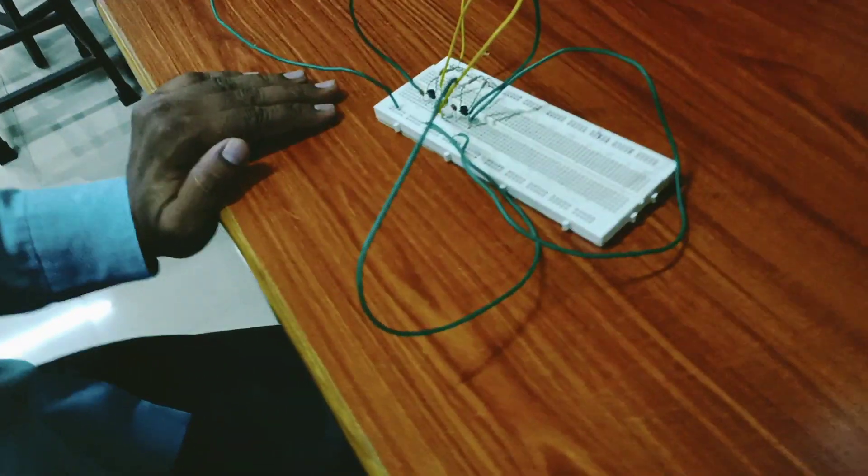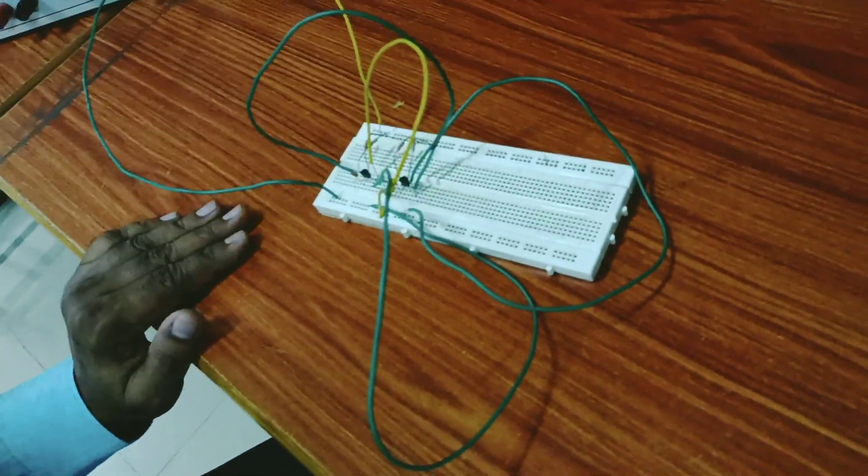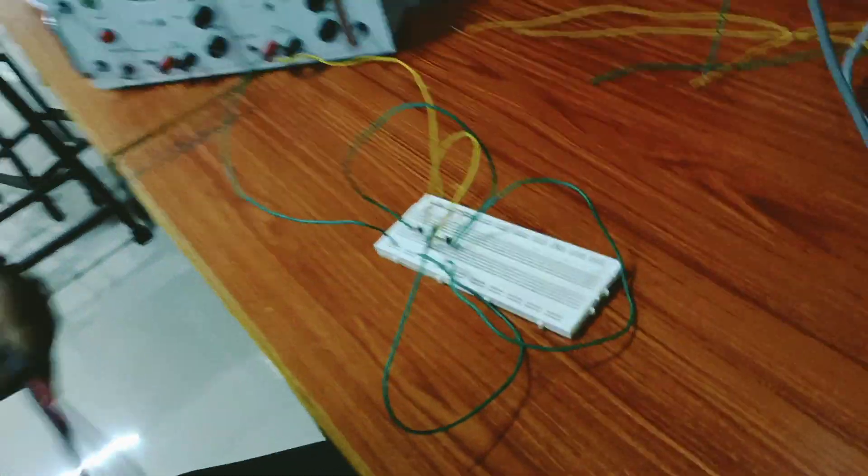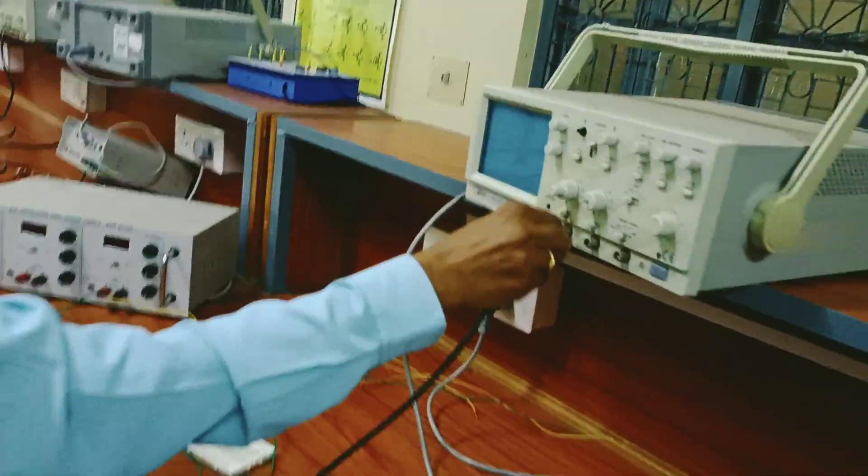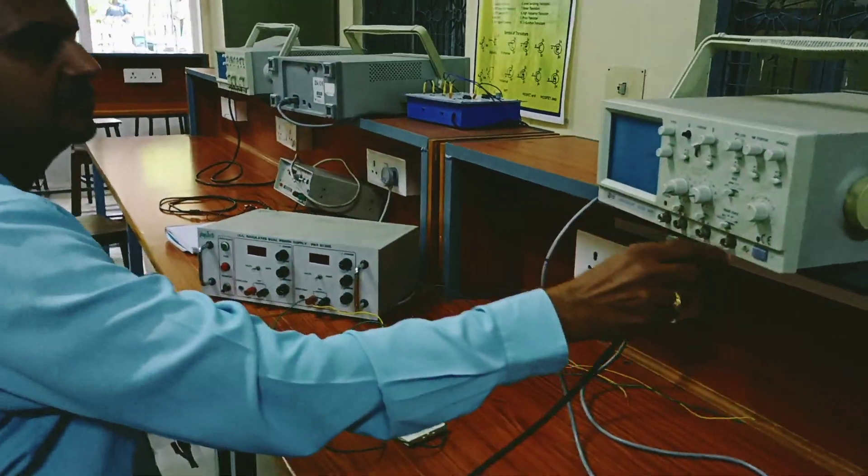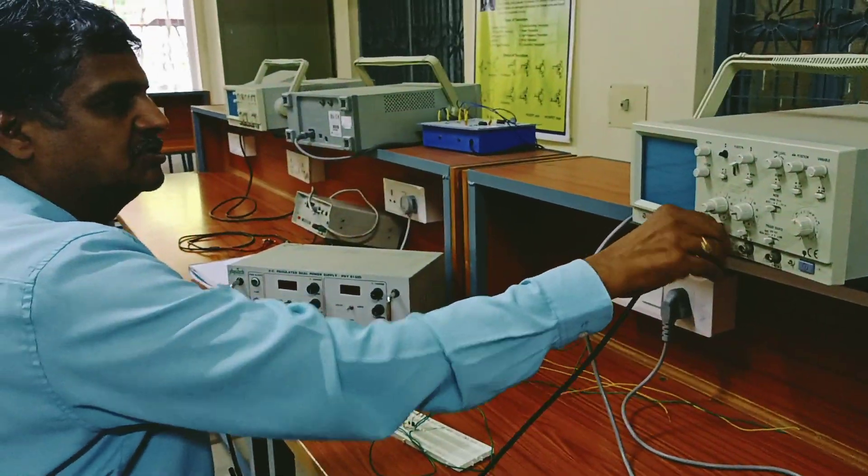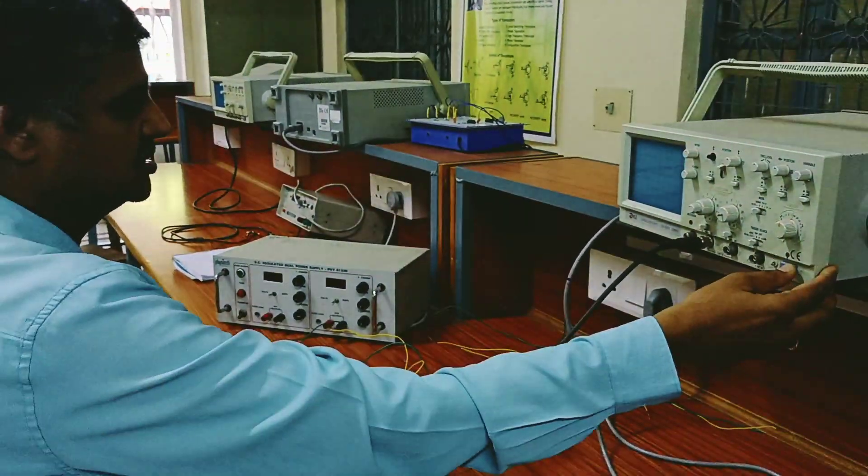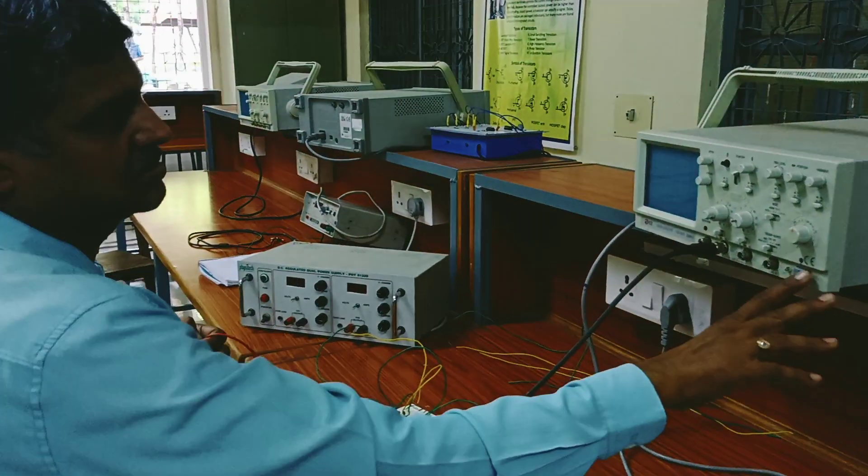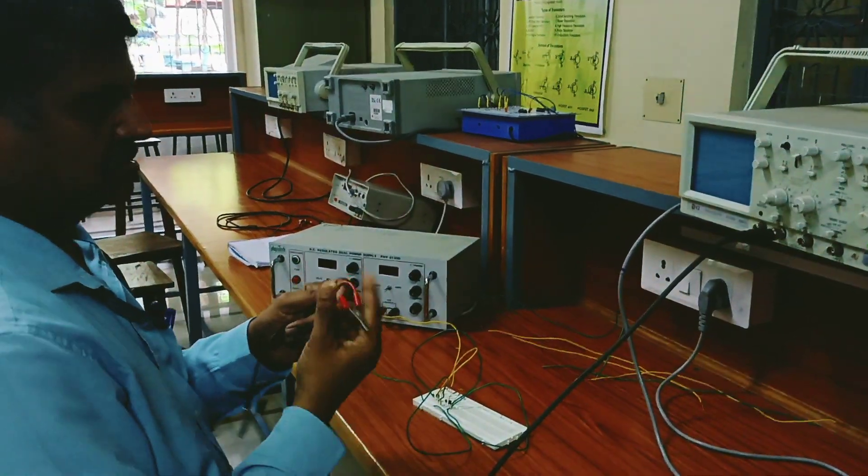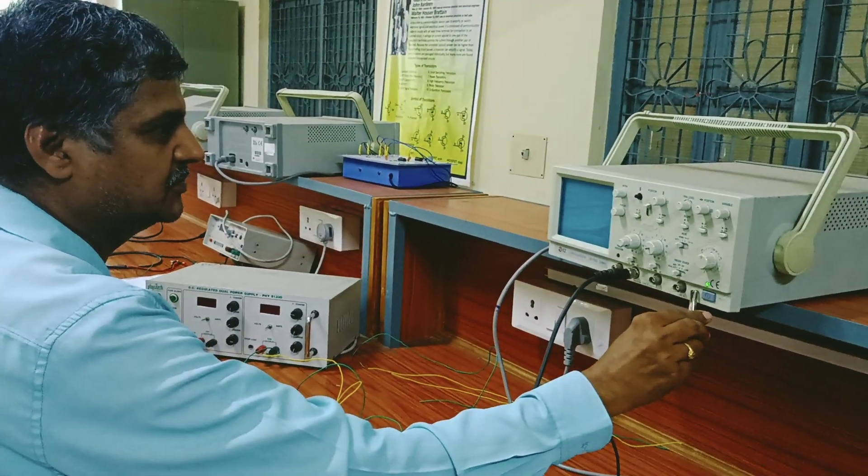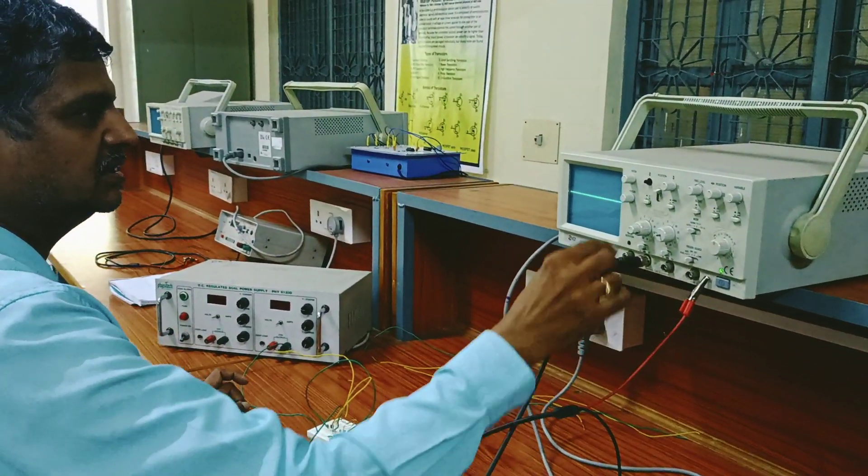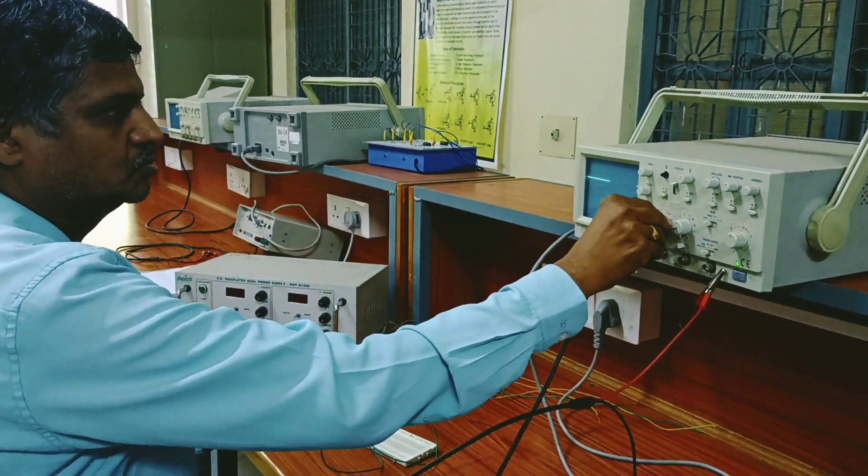Then BNC cable please. So CRO connection I will give it here first. Ensure that this connector has continuity. Connect it here and put it at some two volts or like that, and you should see a square wave.